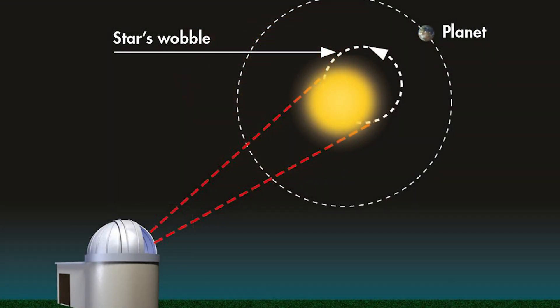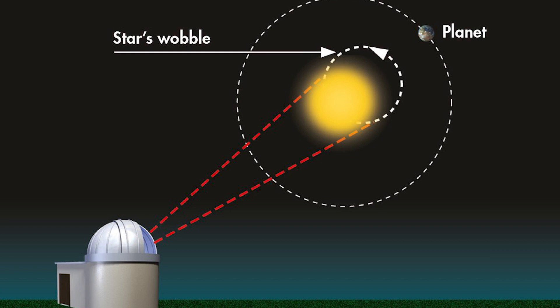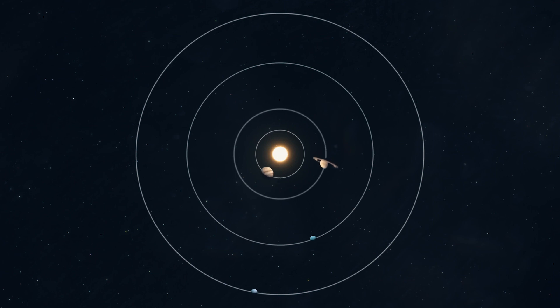Another method is known as astrometry. This method involves measuring the small changes in a star's position caused by the presence of a planet orbiting around it. This method is best suited for detecting planets that have a very long orbital period.